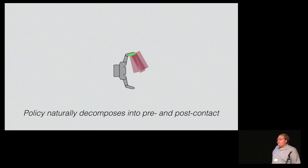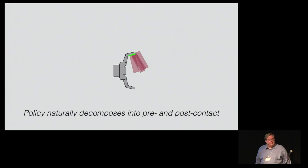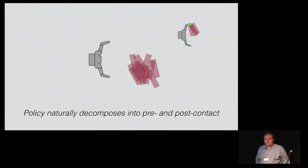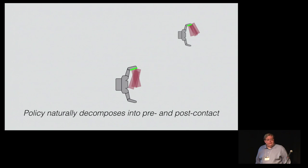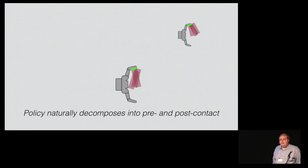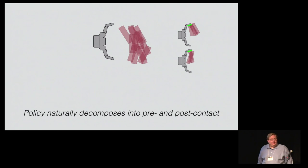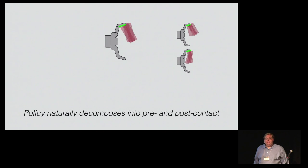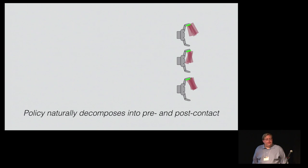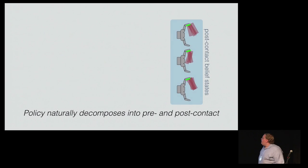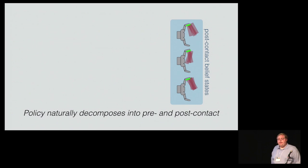Suppose we execute this type of trajectory and we observe contact with our left fingertip — we might get a posterior distribution that looks something like that. If we execute a different trajectory and observe contact with our left fingertip, we receive a very similar posterior distribution. And in fact, the same thing is true if we do the same thing on a completely different prior distribution. In general, what we've observed is that there's a relatively small set of post-contact belief states.